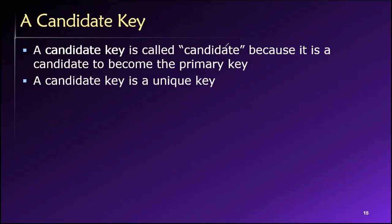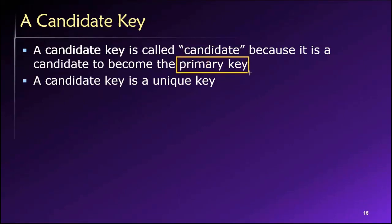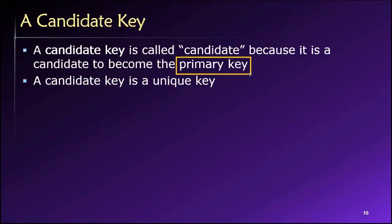So, like in Britain, they selected a new prime minister. There were several candidates to become the prime minister, and ultimately one of them is selected to become the prime minister — in this case, the primary key. A primary key is the key within the table that we have chosen as the basis for uniquely identifying the rows within that table.